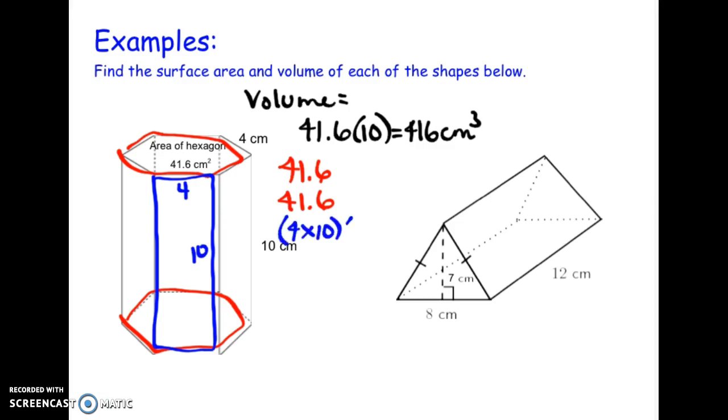And since they all match, we can multiply that by six to get our six rectangles on the side. So this is going to be 240. And when I add 41.6, 41.6, and 240, I get a total surface area of 323.2 square centimeters for the surface area.